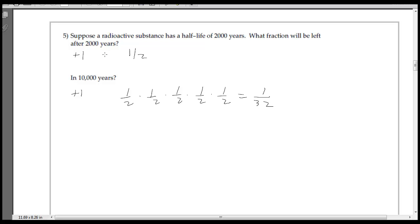Number 5, if the half-life is 2,000 years, what fraction is left in 2,000 years? Well, half. And how about in 10,000 years? So that's only being halved five times. So you can write it as 1 half to the 5th, or 1 half times 1 half times 1 half, which ends up being 1/32nd of what you actually started with, because it's been halved five times.